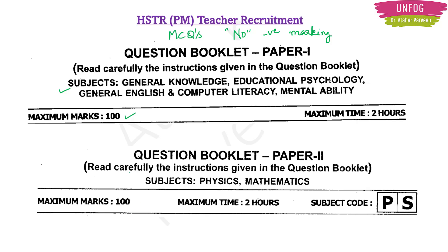Coming back to the exam pattern — Paper 2 will be a subject-specific paper. If you are a PM method aspirant, you will have Physics and Mathematics. If you are a CB method aspirant, you will have Chemistry and Biology. This paper also carries 100 marks and is 2 hours long, MCQ-based. In Paper 2, 40 marks will be for Physics, 40 marks for Mathematics, and 20 marks will be based on methodology for PM method only.